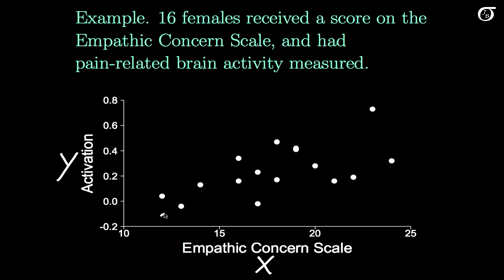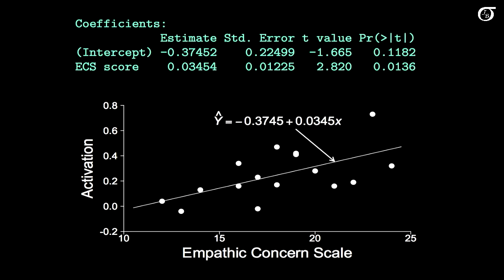So what we're going to do is put a line through those points. The relationship looks rather linear and we want to fit a line through there. So we use the method of least squares and we put it into a computer and we get something that looks like this. We have our estimates of our slope and our intercept and those are put into our least squares regression line. It looks as if as the Empathic Concern Scale score increases, the activity in the pain-related brain centers tend to increase.